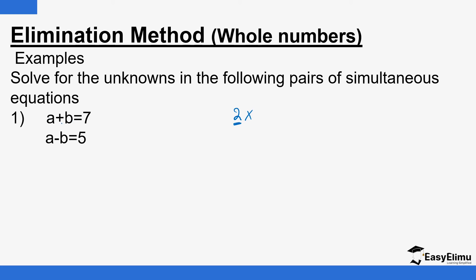The equations must be arranged in a consistent manner: a, b, then the constant — the same pattern in both equations. Then you must make sure that the coefficients are the same for the variable you want to eliminate. In this case, the coefficients of a are both 1. Once you realize the coefficients are the same, you subtract the two equations.